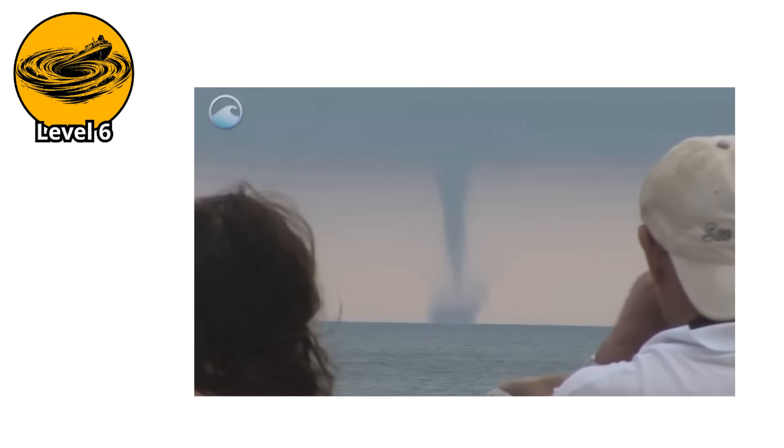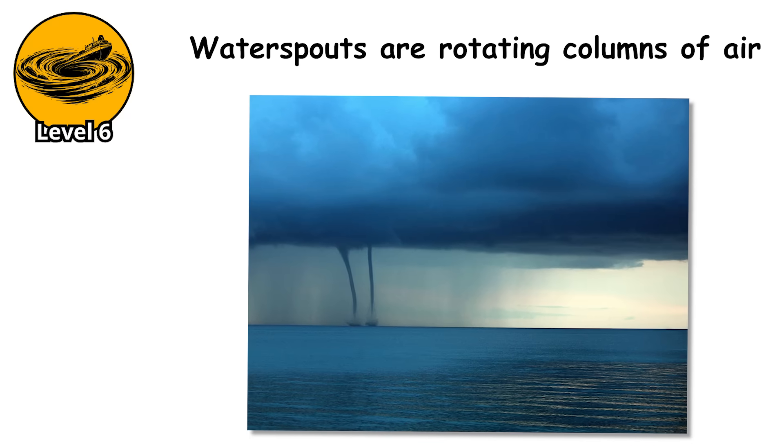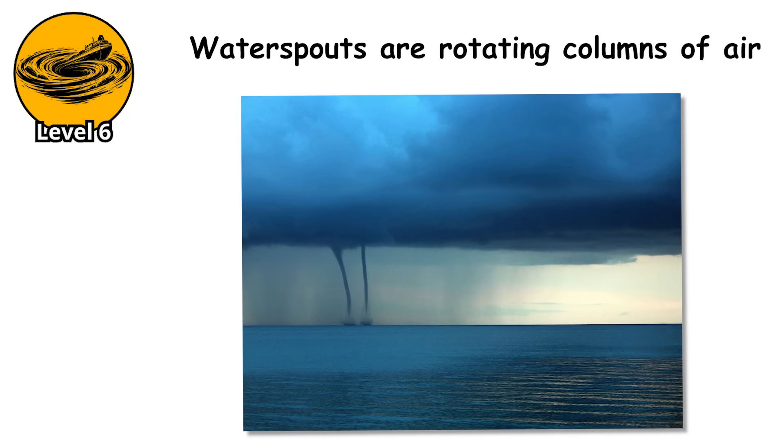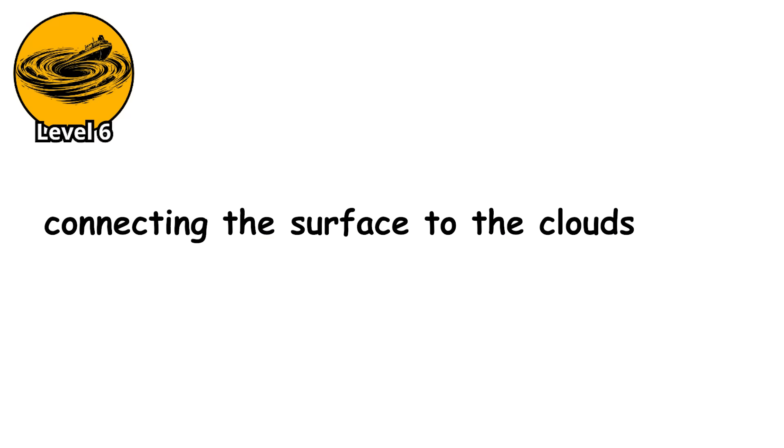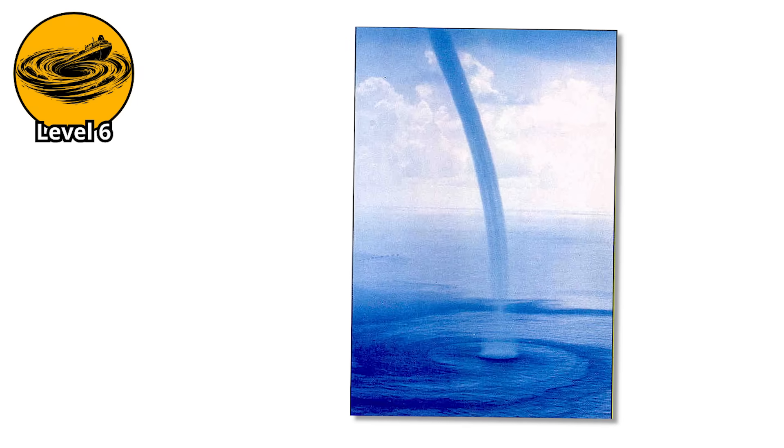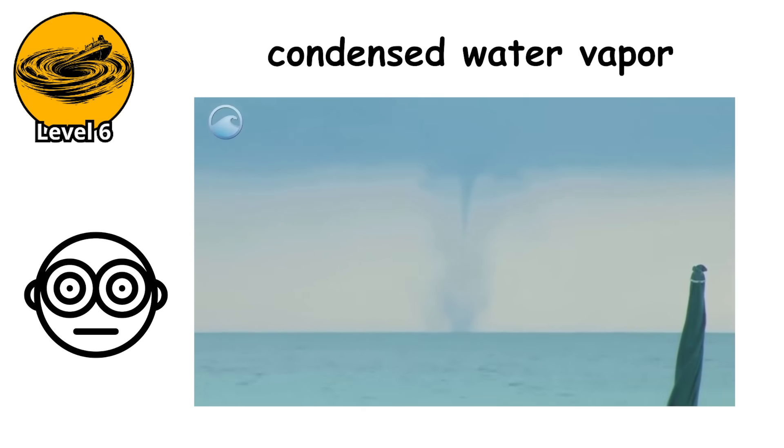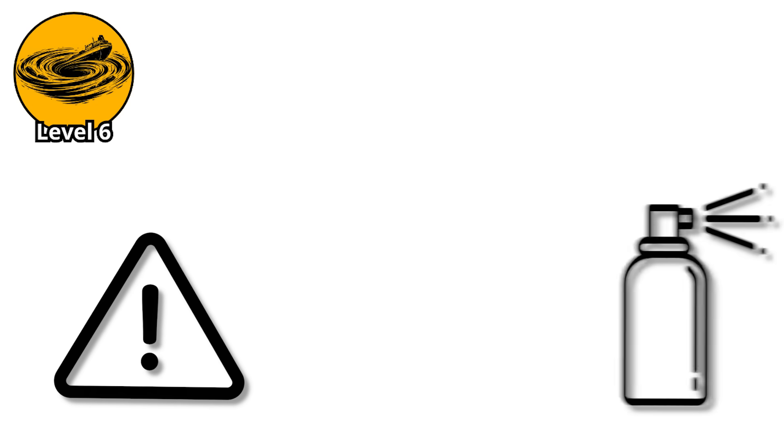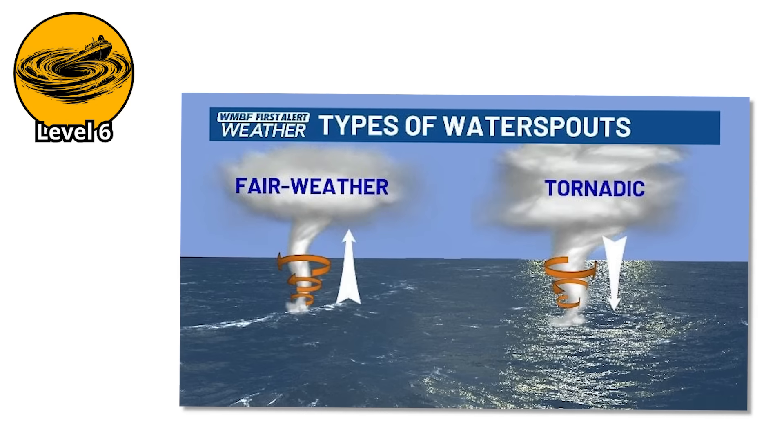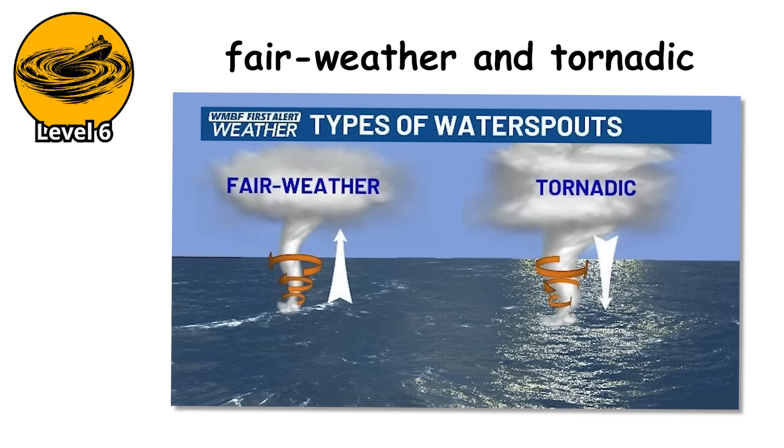A tornado over water is somehow even more terrifying than one over land. Waterspouts are rotating columns of air that form over bodies of water, connecting the surface to the clouds above. They look like twisting tubes of water stretching from sea to sky, but that's mostly an optical illusion. The water you see is actually condensed water vapor. The danger isn't the spray, it's the wind. There are two types of waterspouts, fair weather and tornadic.